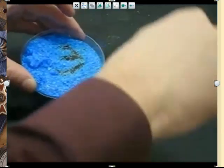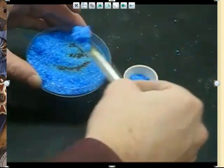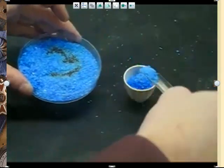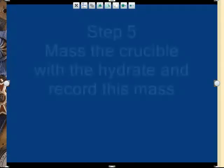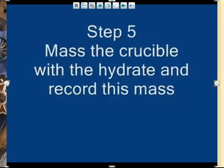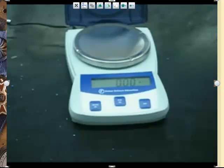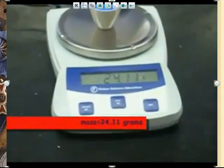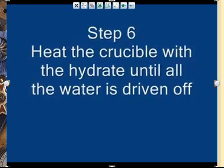Alright, so now we're going to go get some CUSO4 hydrated. It's blue, pretty cool looking crystals. We're dumping those into the crucible. This is a skill we've learned in lab all year. And now we have the mass of the crucible with the hydrate. So we can't just pour the solid on the balance, so it's sort of our container. We get 24.11 grams, so that's the crucible plus the hydrate.